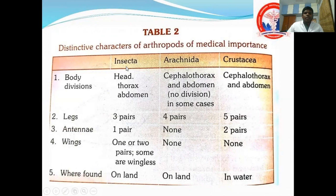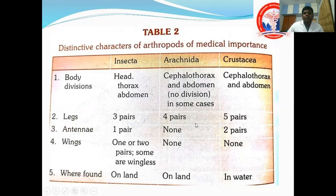In Insecta, body divisions are head, thorax, and abdomen seen separately. Whereas in Arachnida, cephalothorax and abdomen are seen — same in Crustacea. For legs: three pairs in Insecta, four pairs in Arachnida, five pairs in Crustacea.